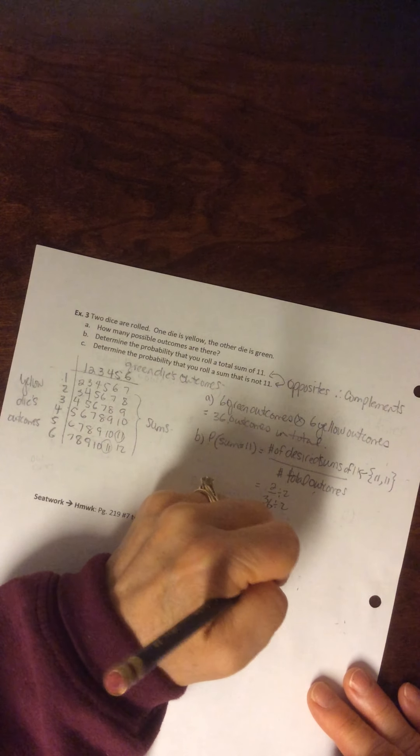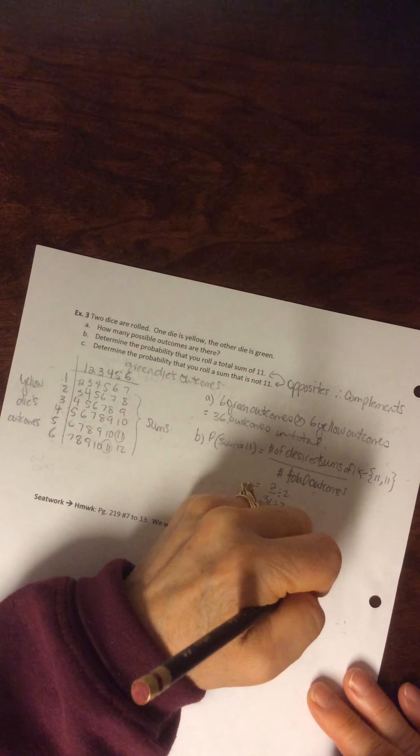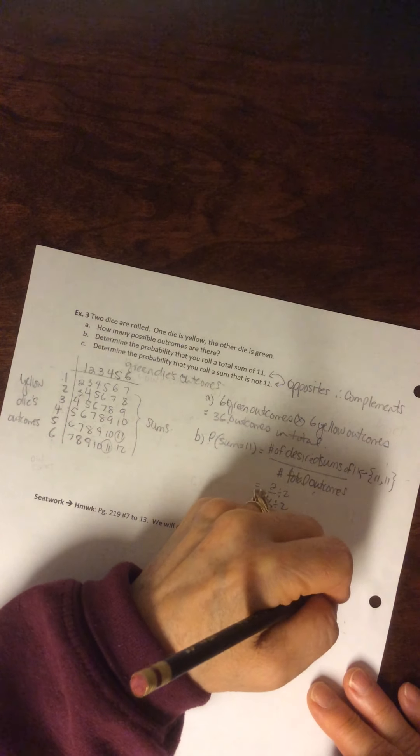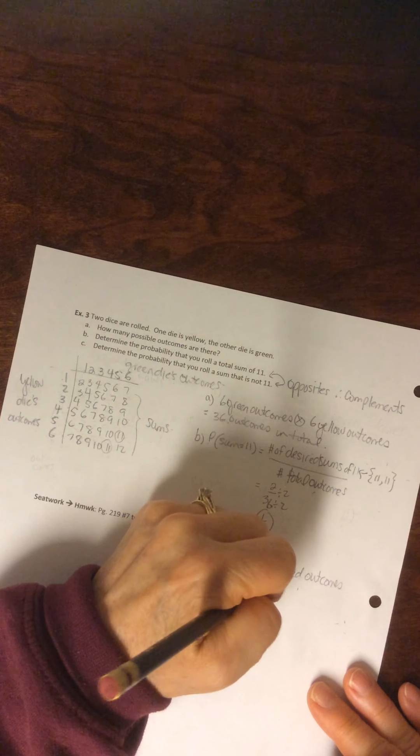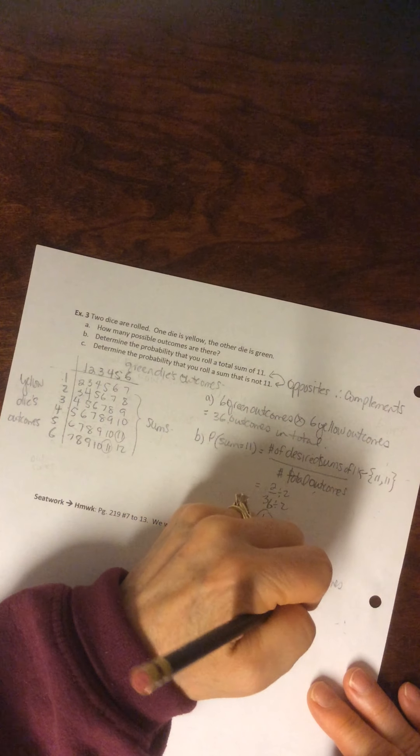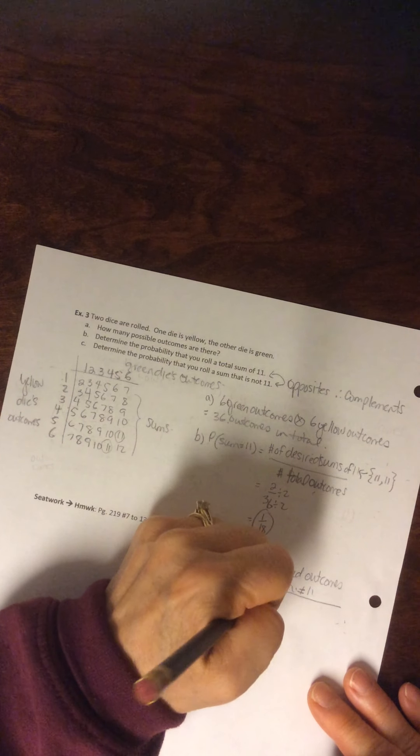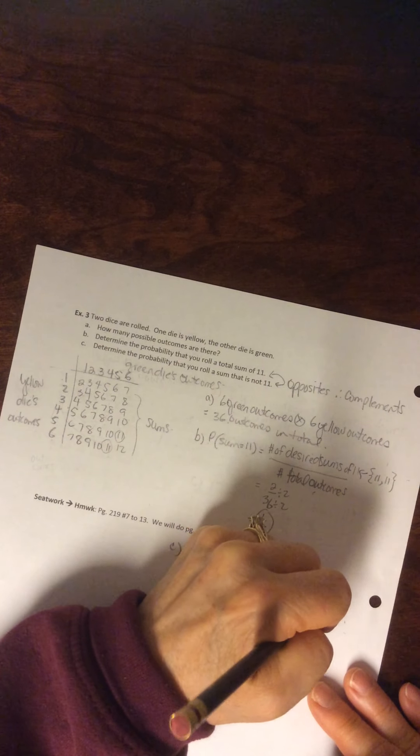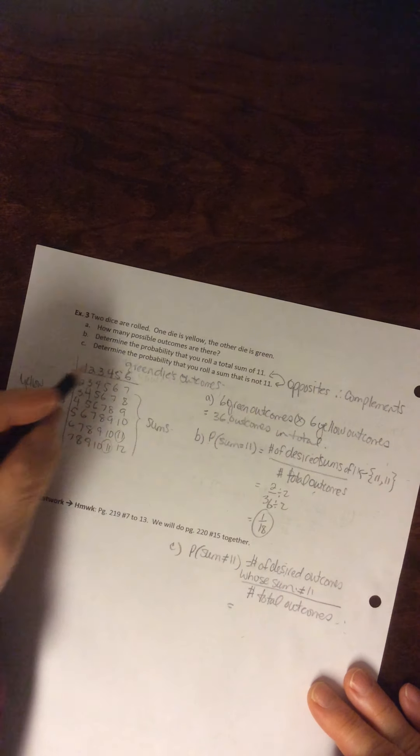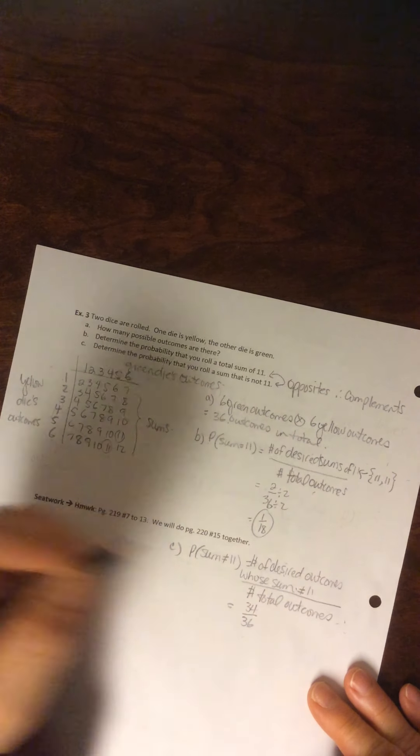So number of desired outcomes whose sum does not equal 11, all divided by the number of total outcomes, right? So you can count, count, count, count, count, and you get 34 out of 36.